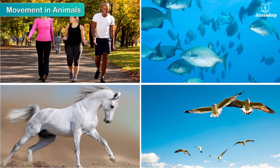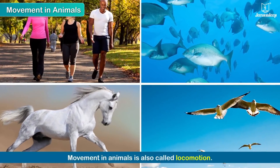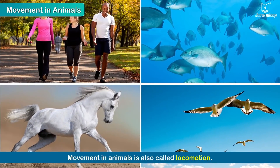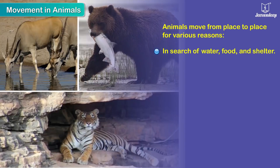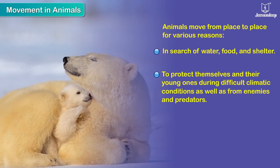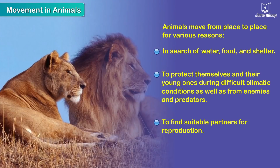Movement in animals is also called locomotion. Animals move from place to place for various reasons: in search of water, food and shelter; to protect themselves and their young ones during difficult climatic conditions as well as from enemies and predators; and to find suitable partners for reproduction.